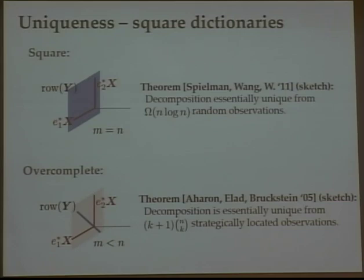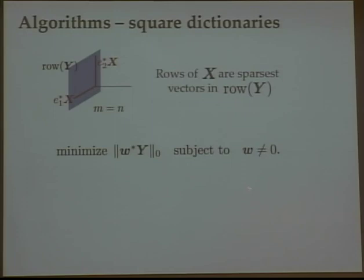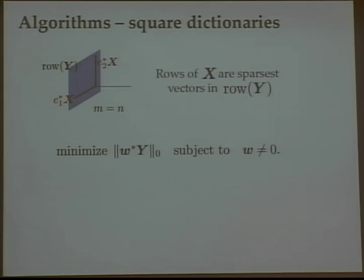The good thing is that this row space of Y is something I know ahead of time — a special property of the complete case, really a special property of A being non-singular. Taking the same random model as before, with coefficients following Bernoulli-Gaussian or Bernoulli-sub-Gaussian random variables, I really don't need to see too many examples for this problem to become well-posed. The problem is well-posed once the rows of X are the sparsest vectors in this known subspace. With a little calculation, you need about n log n examples for that to happen under this random model, giving uniqueness from about n log n random observations.